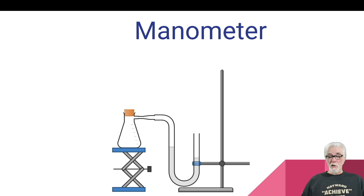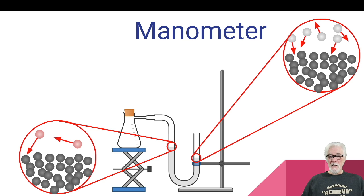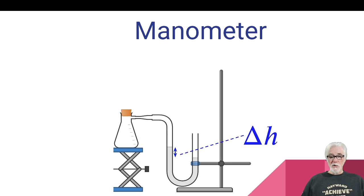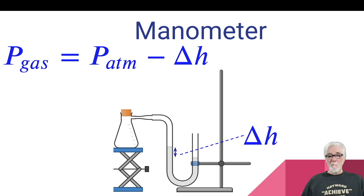If we hook the manometer up to a gas with less pressure than atmospheric, we see the opposite: the height of the column on the gas side is greater than on the atmosphere side, because that gas provides fewer or weaker particle collisions. We can measure the difference in height, and in this case the gas pressure is less than atmospheric pressure by that height. So the pressure of the gas equals the atmospheric pressure minus the difference in height. If we measure the height difference in millimeters of mercury and our barometer reads in millimeters of mercury, we can simply subtract to get the gas pressure.